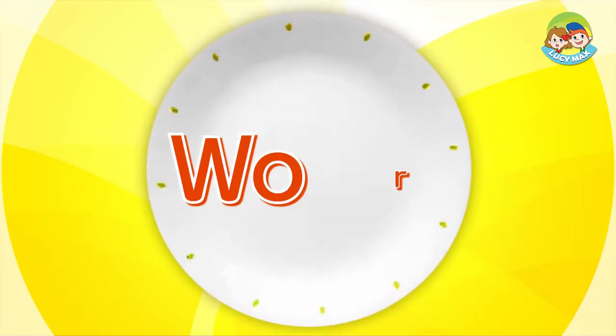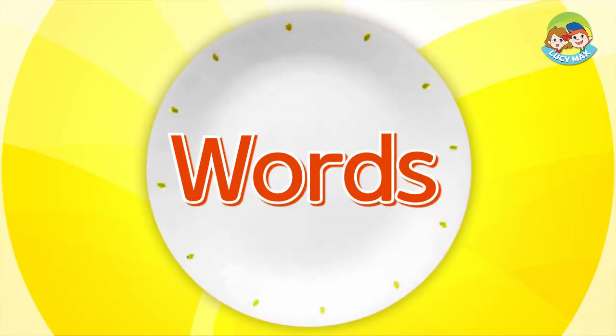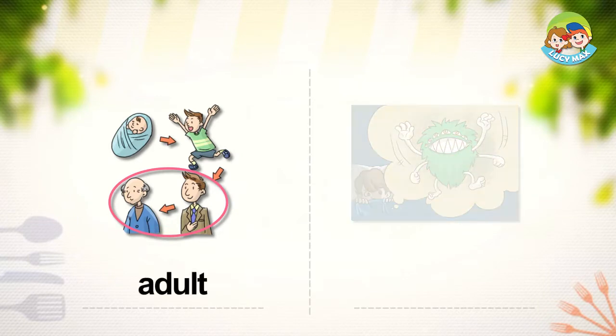We will study some words first. Adult. You see a baby, a kid, a man, and an old man. The man and the old man are adults. When we grow up, we become adults. Women are adults too.